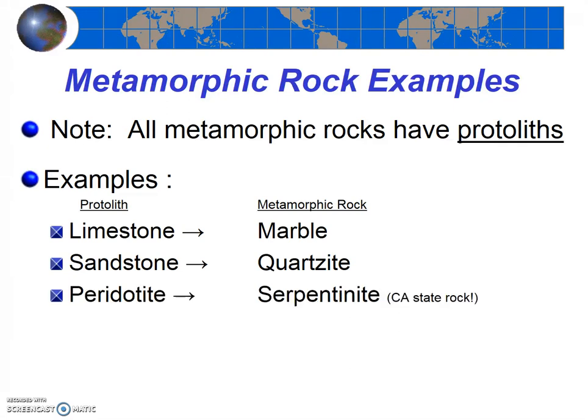It's not only sedimentary rocks that can be protoliths. The igneous rock peridotite that makes up the mantle, when exposed to high temperature waters, can turn into serpentinite, which is the California state rock. Shale is another detrital sedimentary rock made out of muds that can turn into the crystalline metamorphic rock slate when exposed to very high pressures.